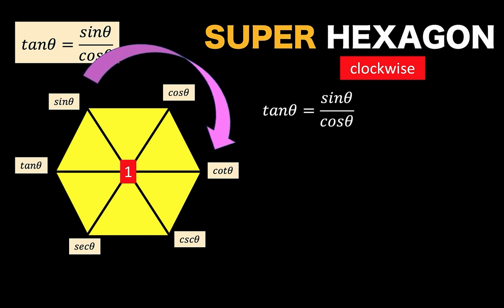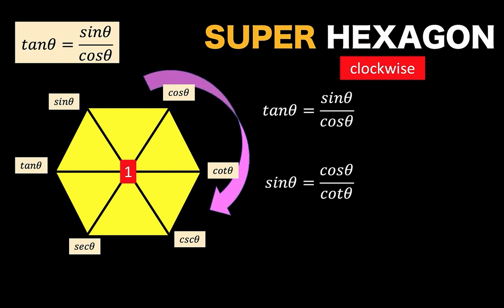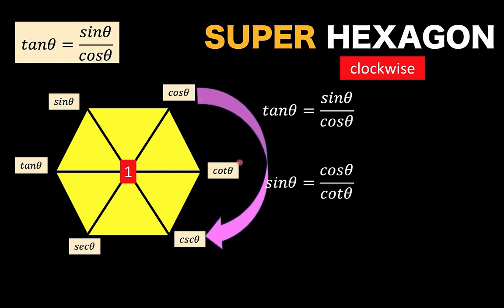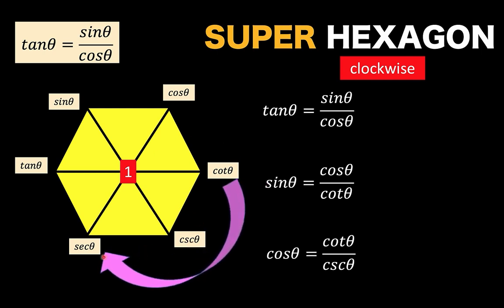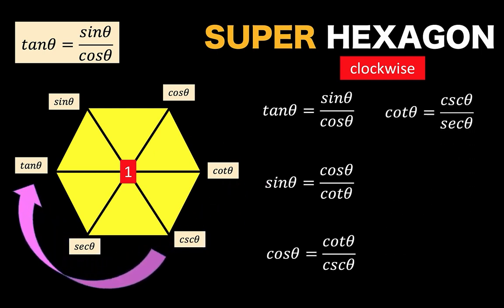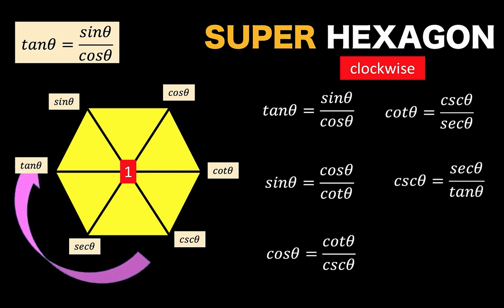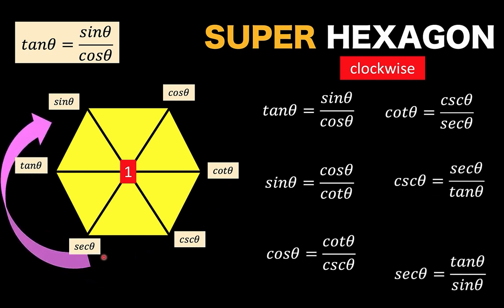Continuing to rotate clockwise: sine theta equals cosine theta over cotangent theta. Then cosine theta equals cotangent theta over cosecant theta. Next, cotangent equals cosecant over secant. Then cosecant equals secant over tangent. And secant equals tangent over sine. We have just generated six trigonometric identities from this super hexagon without memorizing them at all.